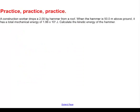Last one, a construction worker drops a 2.00 kilogram hammer from a roof. When the hammer is 50 meters above the ground, it has a total mechanical energy of 1.88 times 10 to the third joules. Calculate the kinetic energy. Well, we know that mechanical energy is equal to the kinetic energy plus the potential energy. So if you want to find the kinetic energy, it's really pretty easy. Just take the mechanical energy and subtract or take away the potential energy.